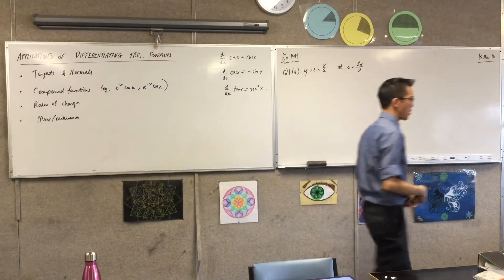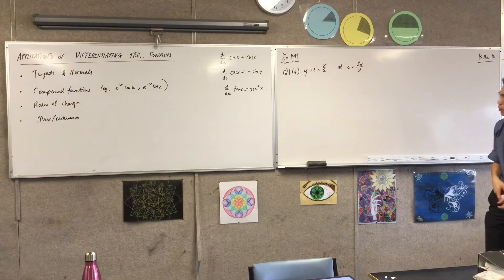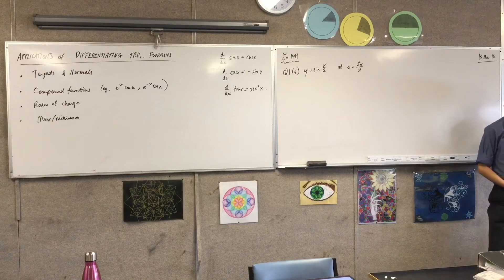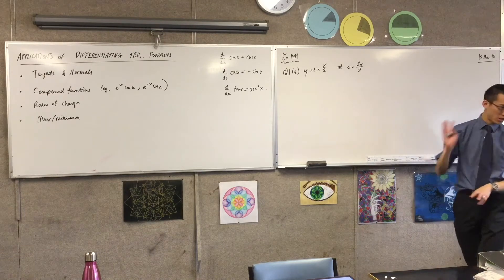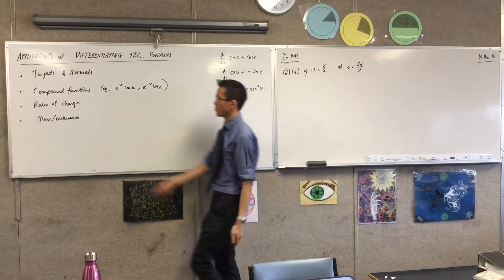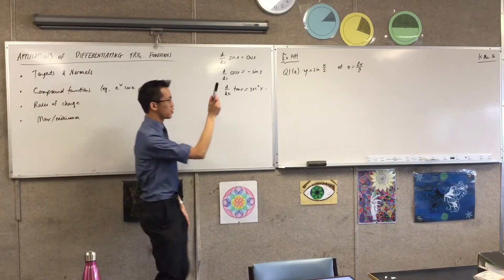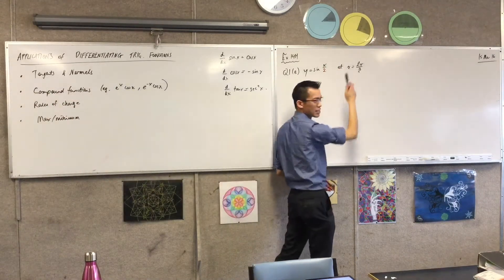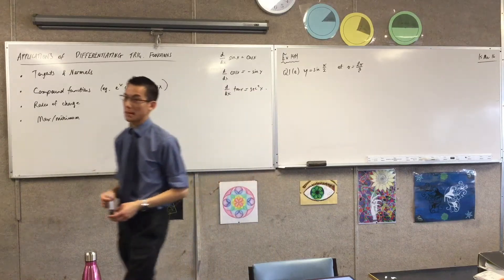I'm going to steal the ingredients of this question. The particular question just asks you to find a gradient — really, really simple — but I'm going to go a step further because it's not that much of a stretch: to find the equation of the tangent to this curve at this x value.